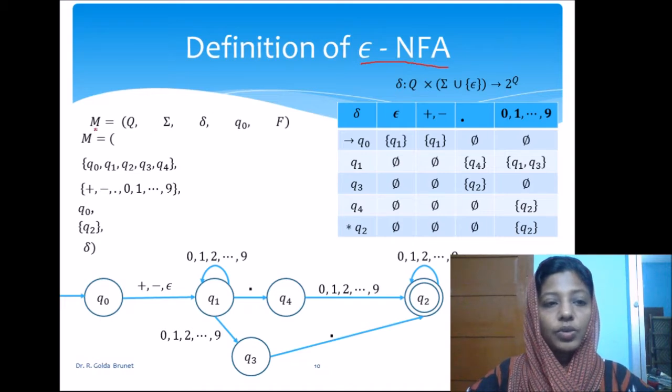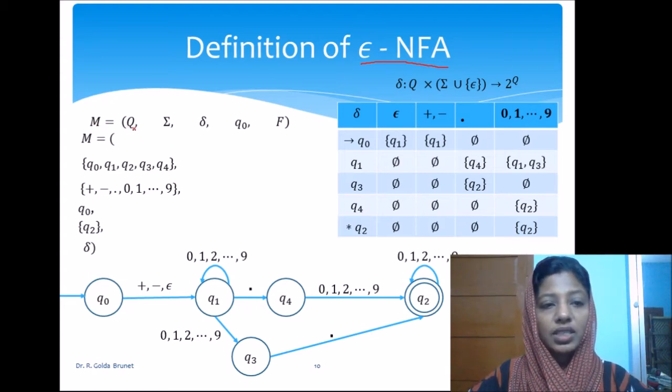As usual, it is a five-tuple component where Q is a finite set of states, sigma is a finite set of symbols,